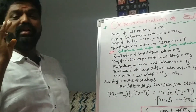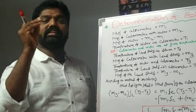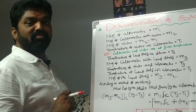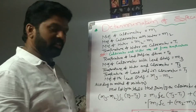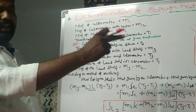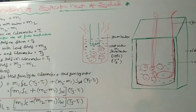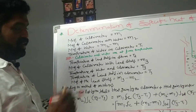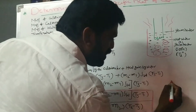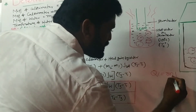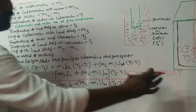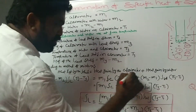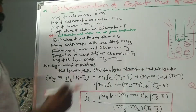According to the method of mixtures, heat lost by the hot body equals heat gained by the cold body. When the lead shots are mixed into water, heat is transferred from the lead shots to the water and calorimeter. So heat lost by the lead shot equals heat gained by the calorimeter plus heat gained by the water. The formula is Q = M·S·ΔT.